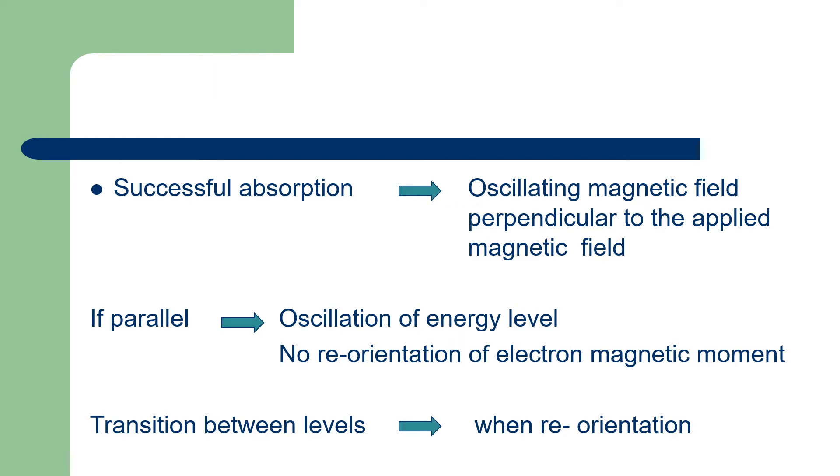In ESR spectroscopy, successful absorption is possible only when oscillating magnetic field is perpendicular to the applied magnetic field. If the oscillating magnetic field is parallel to the applied magnetic field, there will be only oscillation of energy levels and there will be no reorientation of electron magnetic moments. For getting transition between energy levels, there should be reorientation. So, the oscillating magnetic field should be perpendicular to the applied magnetic field.